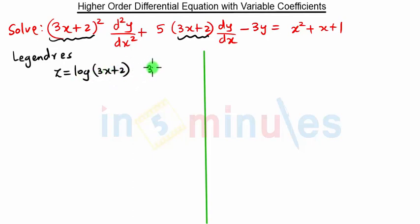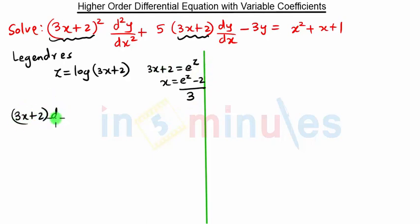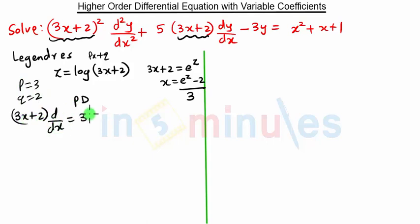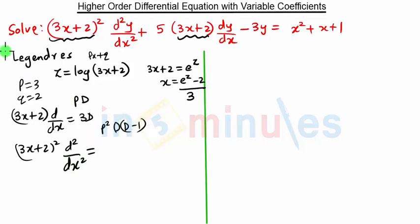Then 3x plus 2 will be nothing but e raised to z, and our x will be e raised to z minus 2 upon 3. Then we also substitute 3x plus 2 into d by dx equal to p into d. Comparing with Legendre's equation we have p equal to 3 and q equal to 2. So 3x plus 2 into d by dx will be 3d, and (3x plus 2) squared times d squared upon dx squared will be 9 times d times (d minus 1), which is nothing but 9d squared minus 9d. This is the basic substitution of Legendre's equation.